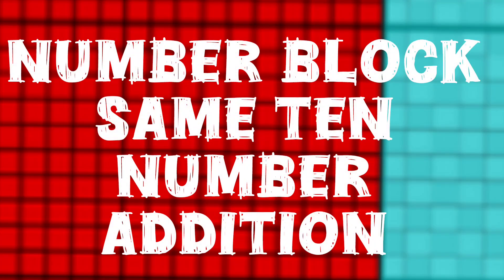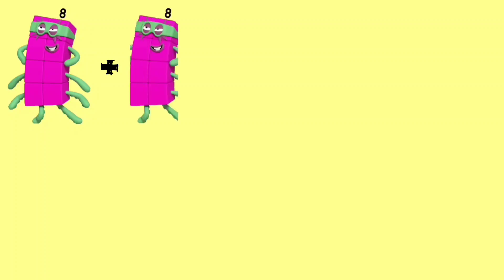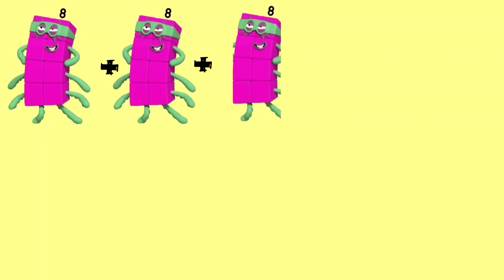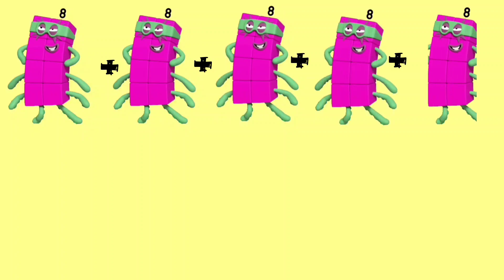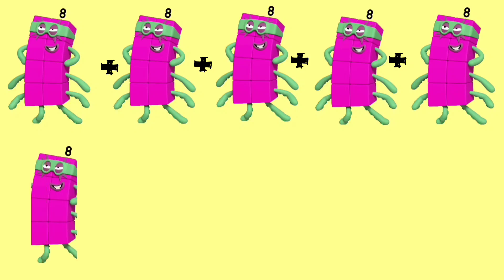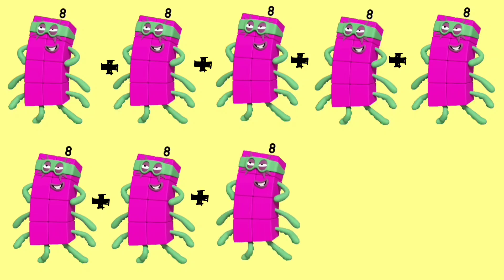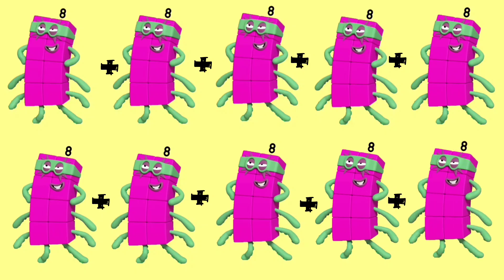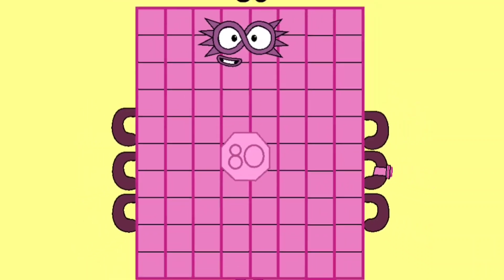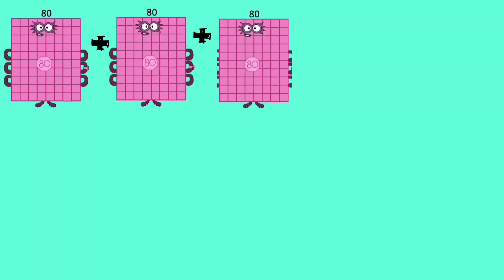Number block, same number addition. Let's start: 8 plus 8 plus 8 plus 8 plus 8 plus 8 plus 8 plus 8 plus 8 plus 8 is equal to 80.